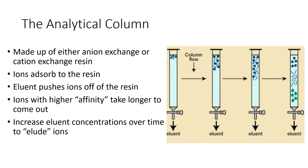The analytical column is the heart of ion chromatography. It's made up of either anion exchange or cation exchange resin. This causes ions to adsorb to the resin, and then eluent pushes the ions off of the resin. Ions with a higher affinity will take longer to come out. What this affinity means is how stuck to the resin is this ion—this has to do with the ion's charge, its size, its electronegativity, and some other things. Basically, the harder something is stuck to that resin, the longer it's going to take to come out.